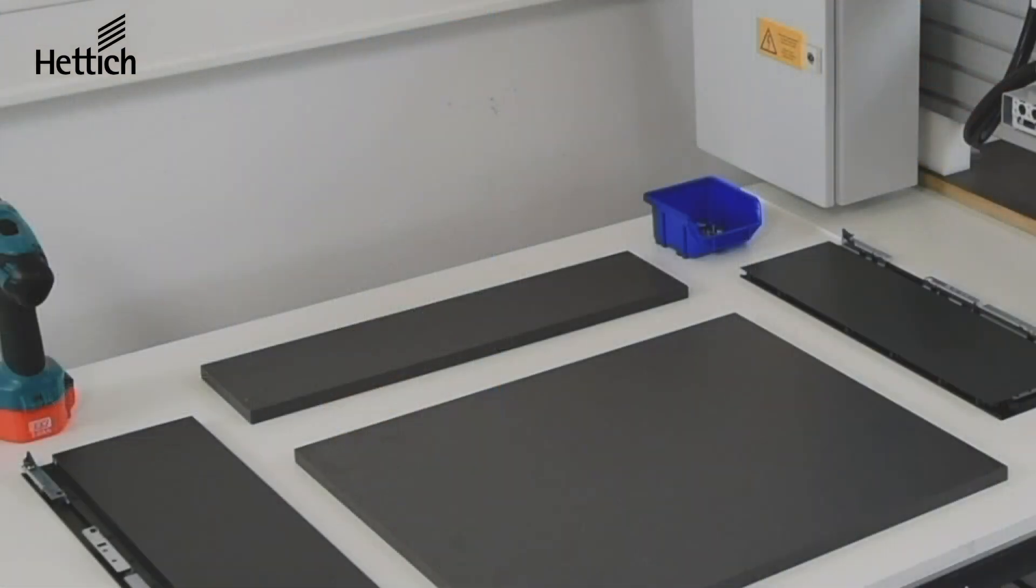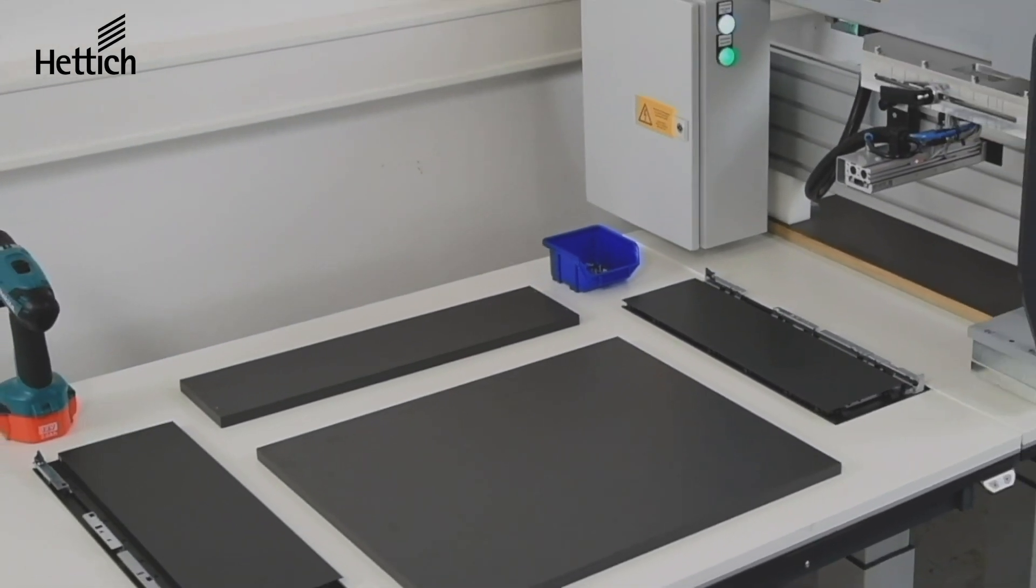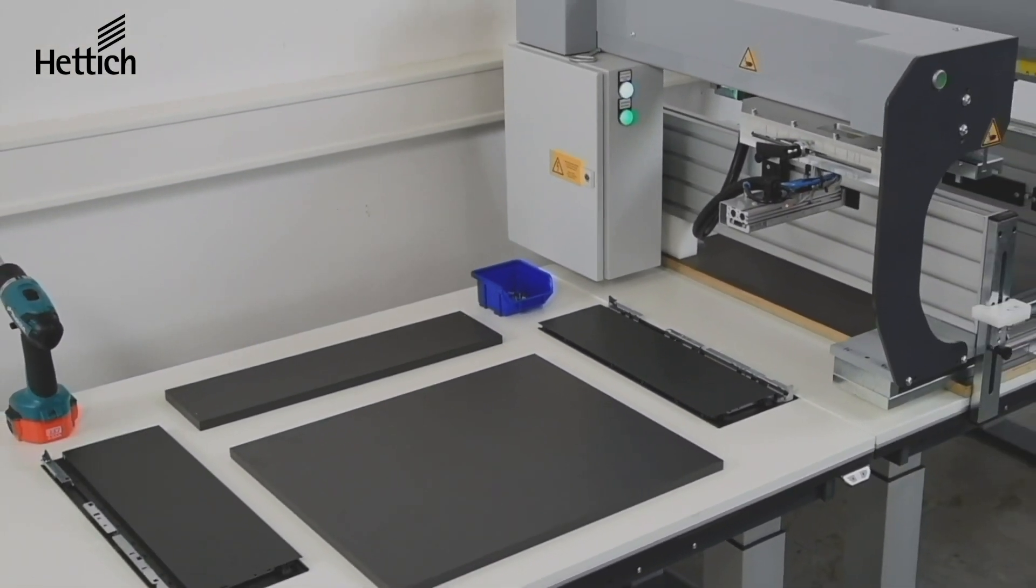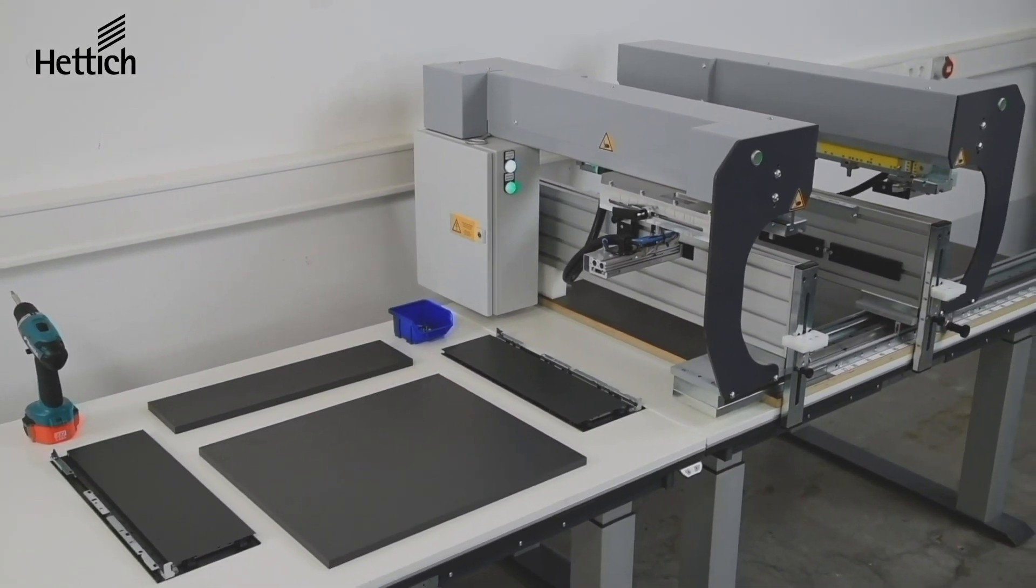Once everything is set up, it's a good idea to have all the items needed to make a drawer ready for assembly beside the machine such as the wooden bottom and back panel, the left and right profiles, and if required the rear stabilizer bracket and the corresponding screws.